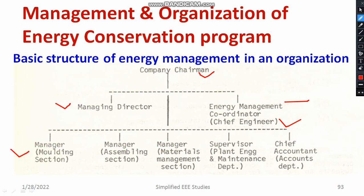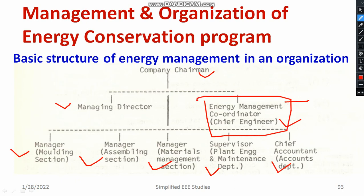There are different managers such as manager for molding section, manager for assembling unit, manager for material management, supervisors, chief accountant, etc. The chief engineer, or energy management coordinator, has a crucial role to control different engineering processes and to monitor different managers.